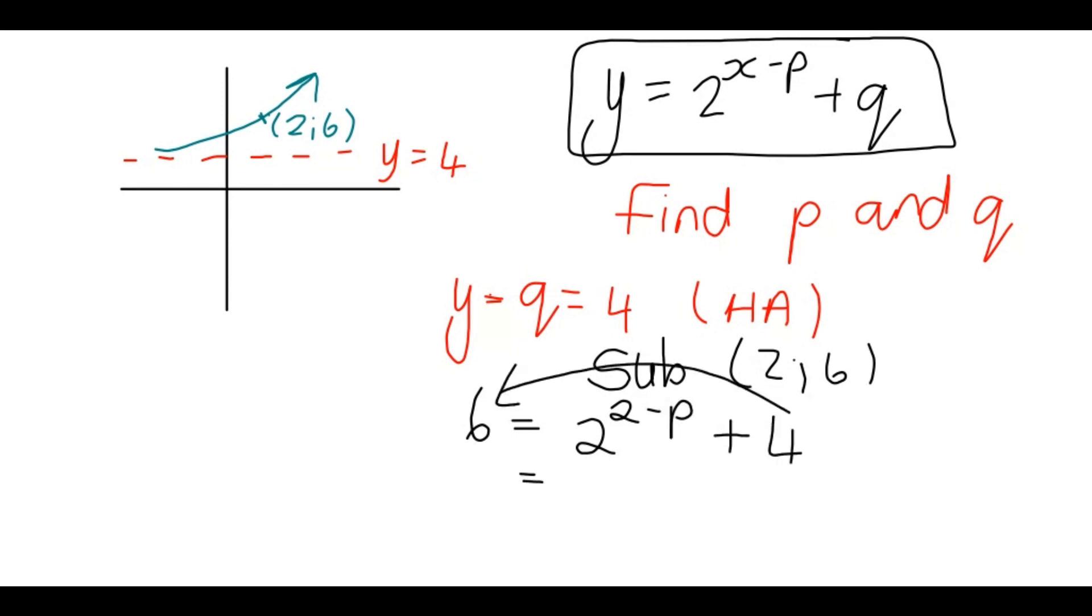I take the 4 over to that side, it becomes negative. 6 minus 4 is 2, 2 to the power 2 minus p remains. Now this is something that's very important when it comes to the exponential function. You need to know that in equations, if I have 2 equals 2 to the power, let's say x, then this 2 has more to the power 1, if there is no power. It's always 1. Which tells me then that I can drop the bases and x will be equal to 1. So keep this in mind.